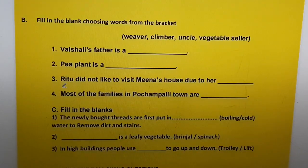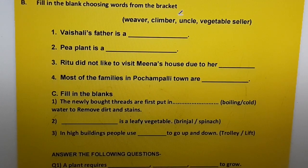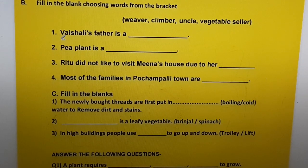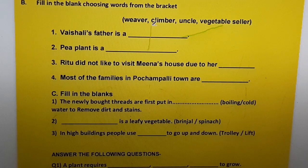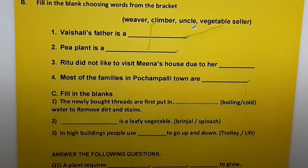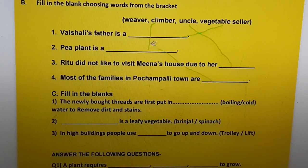Part B — Fill in the blanks, choosing a word from the bracket. Words: weaver, climber, uncle, vegetable seller. 1) Vaishali's father is a vegetable seller. 2) Pea plant is a climber. 3) Ritu did not like to visit Meena's house due to her uncle. 4) Most of the families in Pochampalli town are weavers.